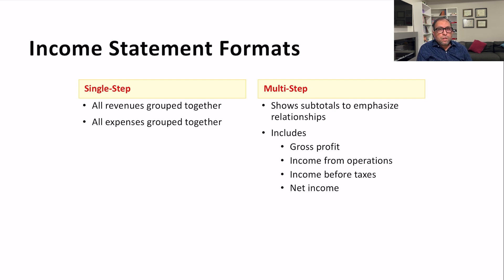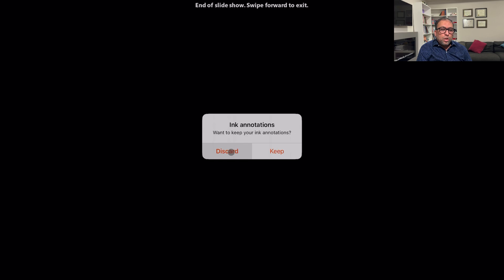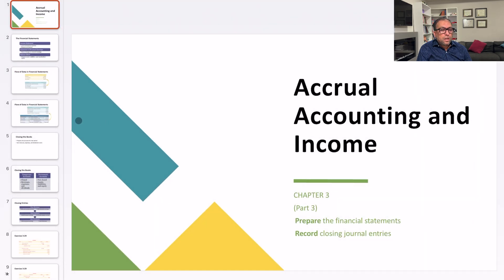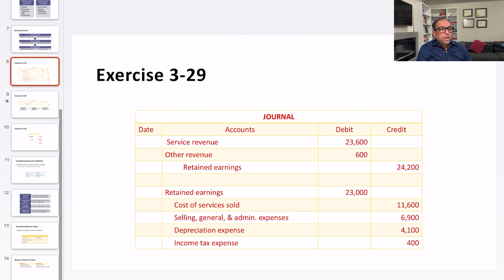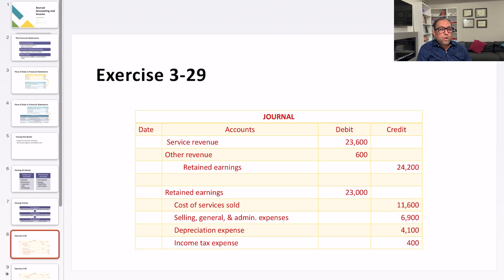There is also a multi-step income statement, which is normally used in practice. It shows subtotals to emphasize relationships and includes gross profit, income from operations, income before taxes, and then net income after tax. This covers the closing entries and the formats of the balance sheet and income statement.